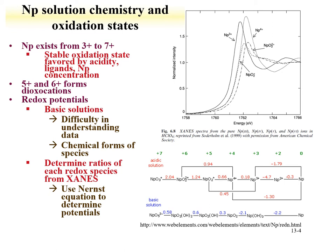XANES data is shown here, where you have the absorption edge of different neptunium species as a function of oxidation state. We see neptunium-3 absorbs early, then 4, and the 5 and 6 have behavior indicative of the axial oxygen. This information can be used to determine the ratio of different oxidation states in the solutions examined, and by using the Nernst equation, the redox potentials can be determined.